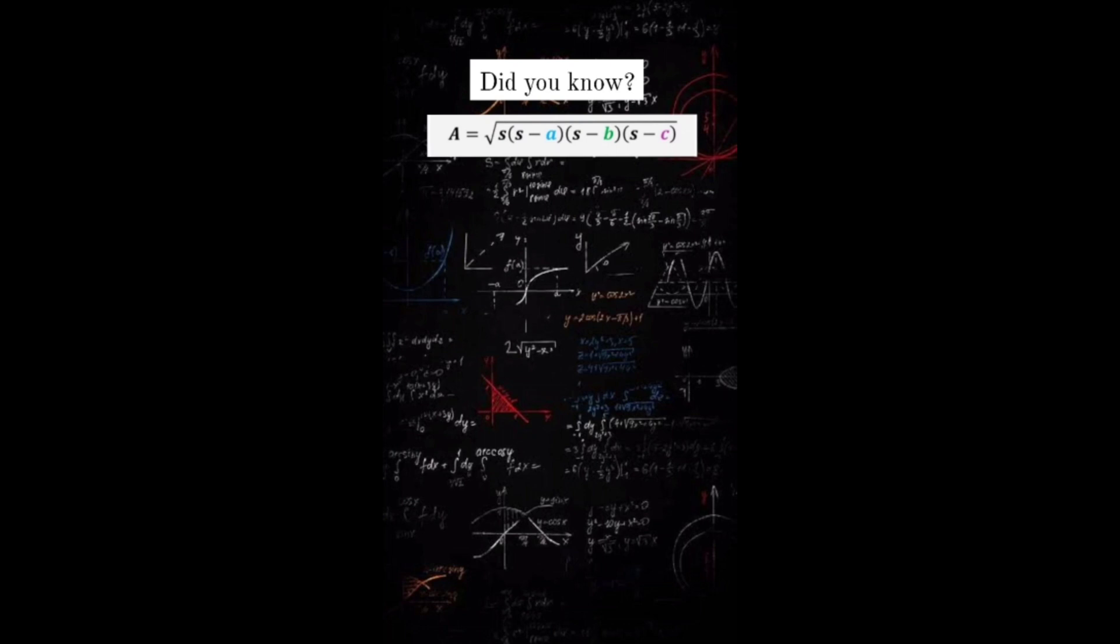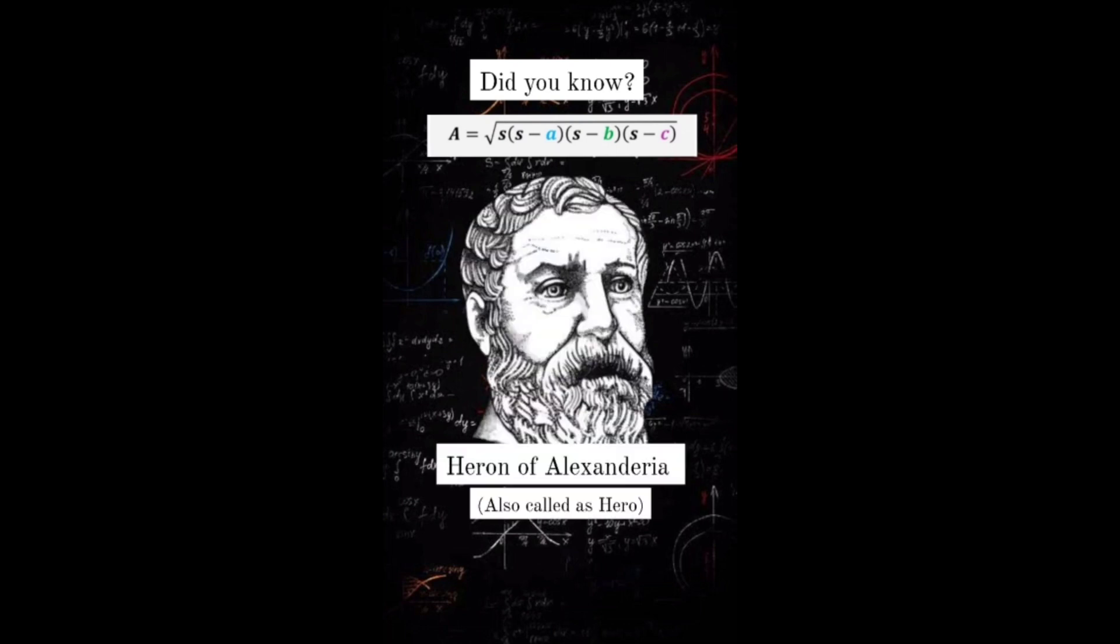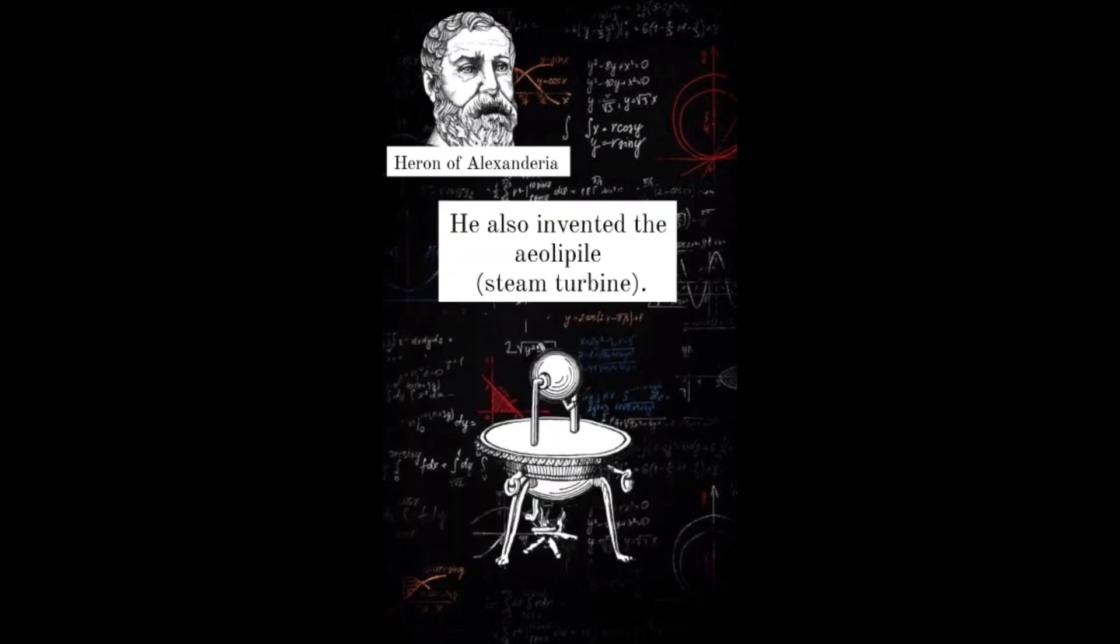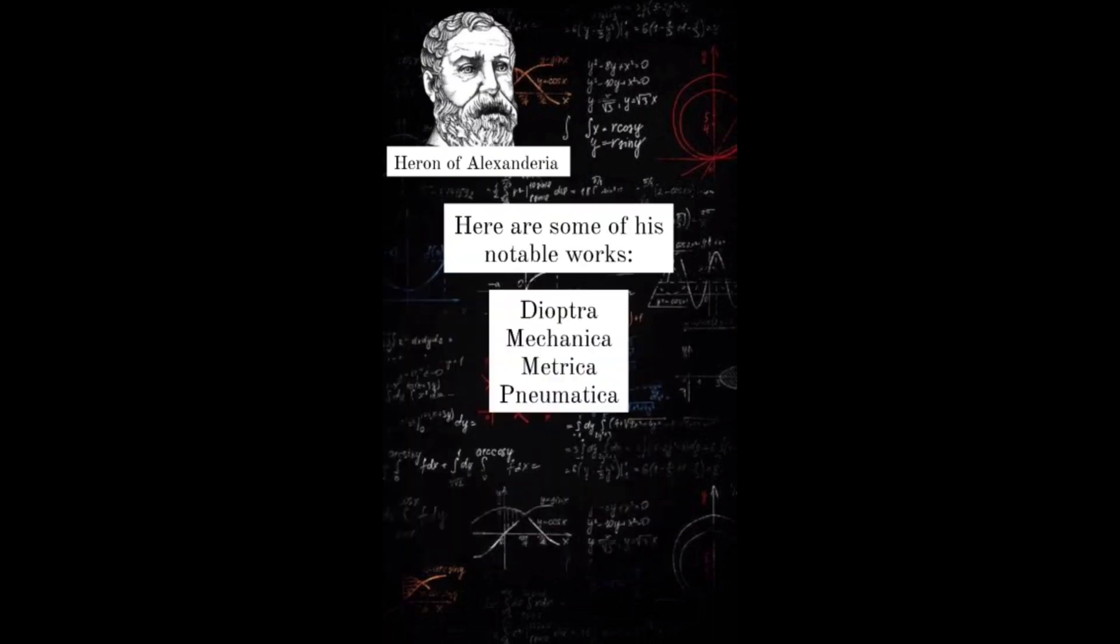Did you know? This formula was invented by a Greek mathematician, geometer and inventor named Heron of Alexandria. Heron's formula is used to find the area of the triangle given the three sides. He also invented the aeolipile. Here are some of his notable works: Dioptra, Mechanica, Metrica, and Pneumatica.